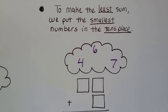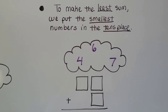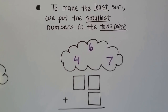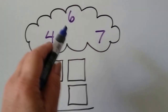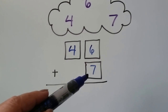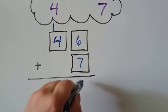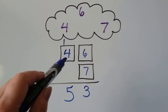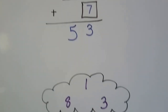Now we need to make the least sum, so we're going to put the smallest numbers into the tens place. We've got three numbers: a six, a four, and a seven. We need the smallest sum, so we put the smallest number in the tens place — the smallest number is a four. Then we can put the six and seven in the ones place. Six plus seven — starting with the seven and counting up: seven, eight, nine, ten, eleven, twelve, thirteen. We regroup the one from the thirteen and put the three down. Four plus one is five, and we get fifty-three. Four tens is less than six tens or seven tens, so that gives us the least sum.